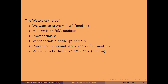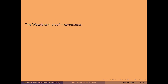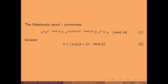In the end, the verifier checks that π to the p times x to the power of e mod p is equal to y. The correctness of this proof is relatively easy to check — it's basically just the simple statement that e equals the quotient times p plus the remainder.